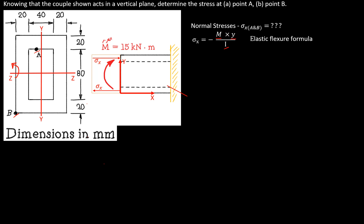Another important thing to consider is that the normal stress at the neutral axis is zero. As the y value increases, the stress increases. So the maximum stress occurs at the outermost fibers. This tells us that the stress at point B should be larger than at point A — if we get B smaller than A, something is wrong with our calculations. Here, I is the moment of inertia or second moment of the cross section.